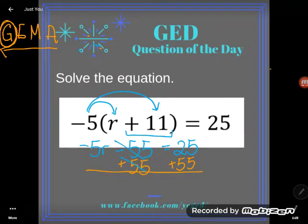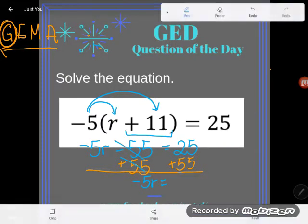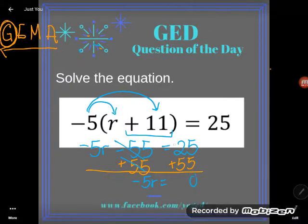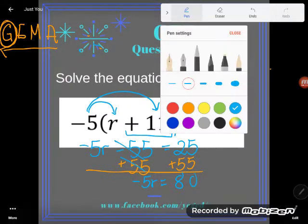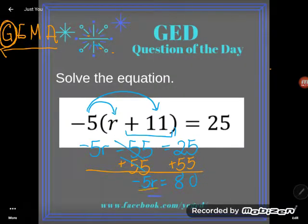Subtracting 55 and adding 55 are opposites - they cancel. I get negative five r. And then on that side, 25 plus 55 is 80. Almost done, but r is not alone. In order to get rid of this negative five multiplier, I should divide. Whatever I do on one side, I do to the other.